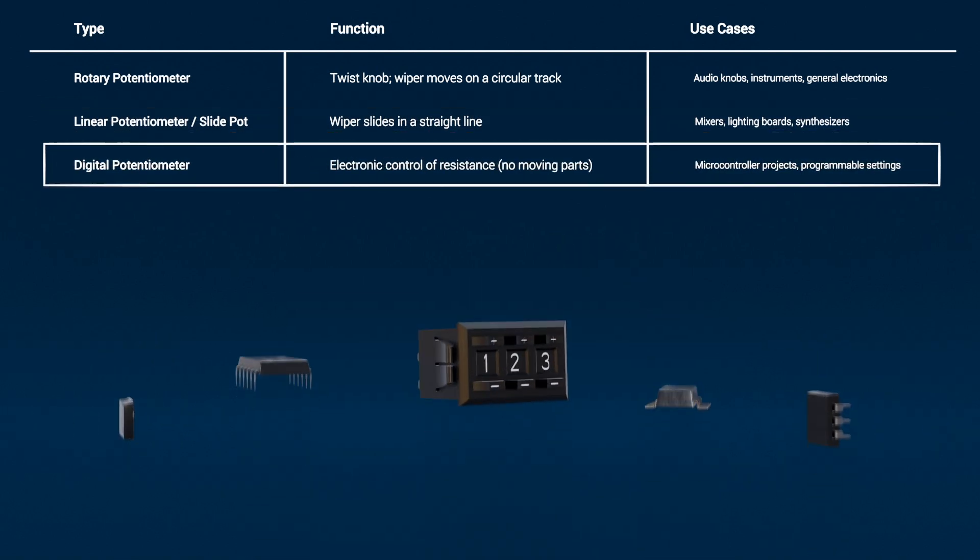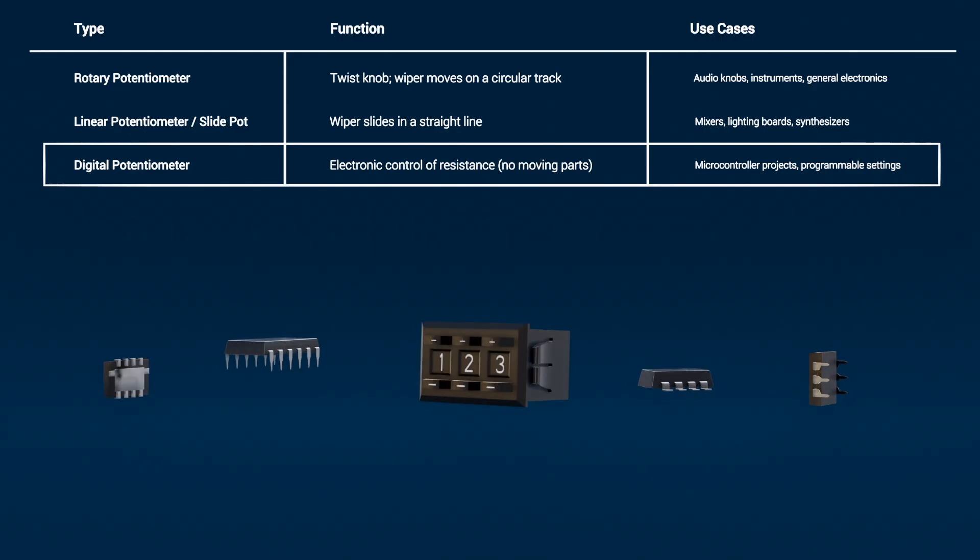Digital potentiometer: No moving parts here. A digital pot uses internal resistor ladders and electronic switches to set resistance using digital signals. They're used in microcontroller-based systems for precise, programmable control, but typically can't handle the higher voltages or currents that mechanical pots can.